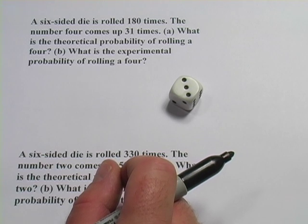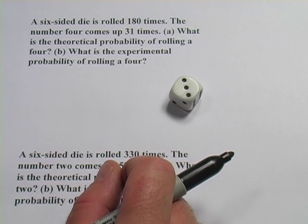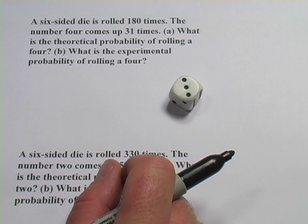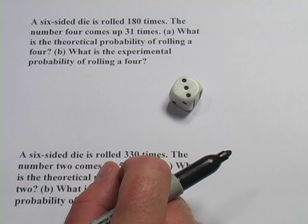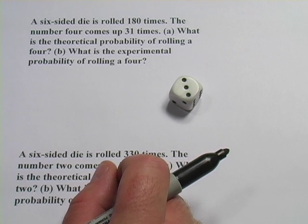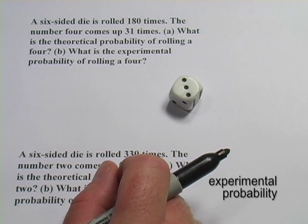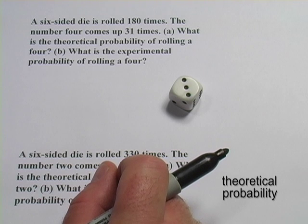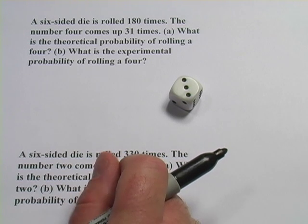Here we have a couple of problems that have to do with probability, and probability is just a word for the likelihood of something happening. How probable is it? There are a couple of terms you need to know for these problems, one is experimental probability and the other is theoretical probability. So let's just talk about that a little bit.